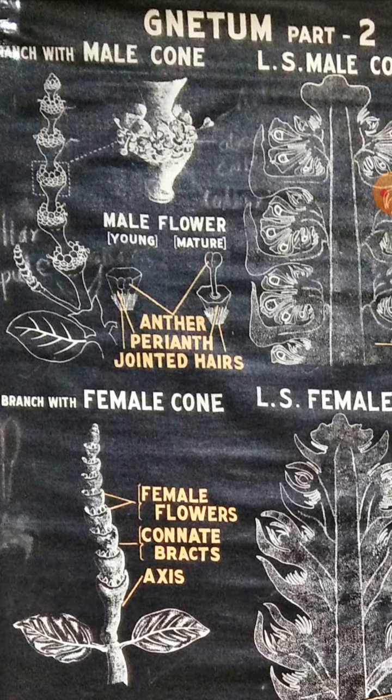Each flower consists of 2 bracts, i.e. perianth, enclosing 2 unilocular anthers on a short stalk. Multicellular hairs are present at the base of perianth.